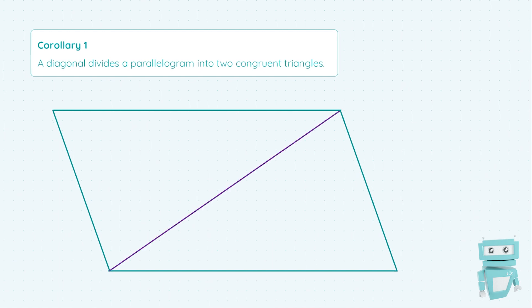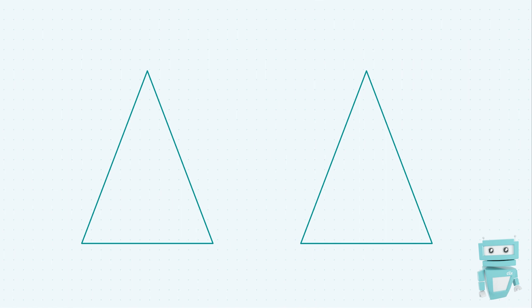So if we have a parallelogram and we draw a diagonal across it, this corollary states that the two triangles created are exactly the same. As a bit of revision: congruent triangles are any two triangles which have the exact same sides and the exact same angles — the only way they differ is by their location. These two triangles have the same angles and all their sides are equal. I'm drawing dashes through each side to indicate that sides with one dash are equal, sides with two dashes are equal, and so on.